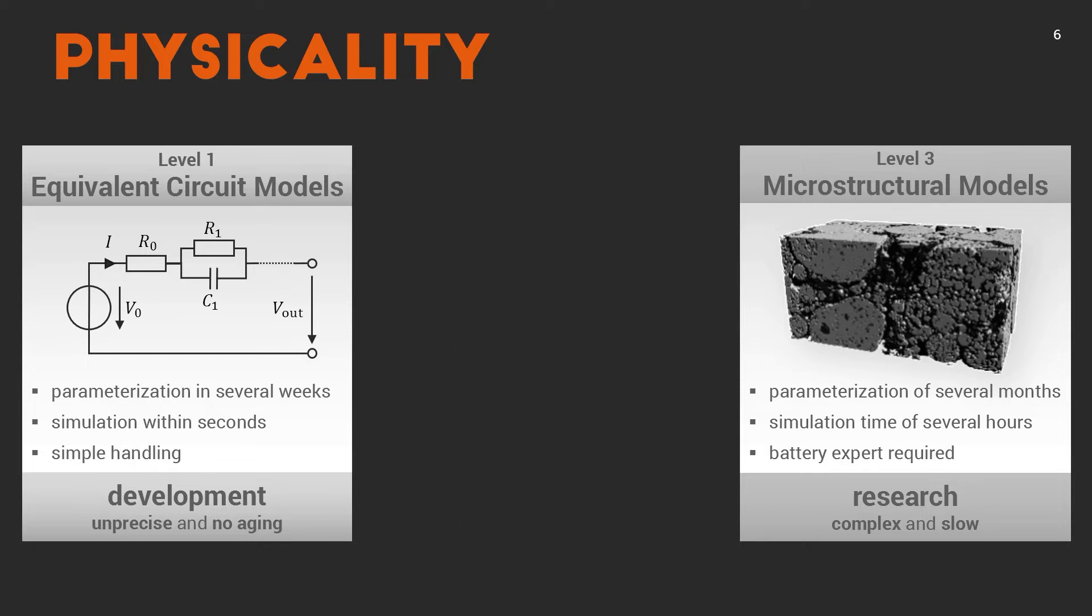If you go to the other extreme, you have those microstructural models. And that's what we did in our PhDs. Parameterization is extensive, takes several months. The reason is you have to open up cells and create the microstructure from the electrodes. Simulation time is hours for a simple discharge. And you really need a battery expert that just does nothing else in working with the model. You have to take care of meshing and stability of the solver, convergence and so on. So this is something that is needed in research, but it's way too complex and too slow to use this in a total vehicle simulation.